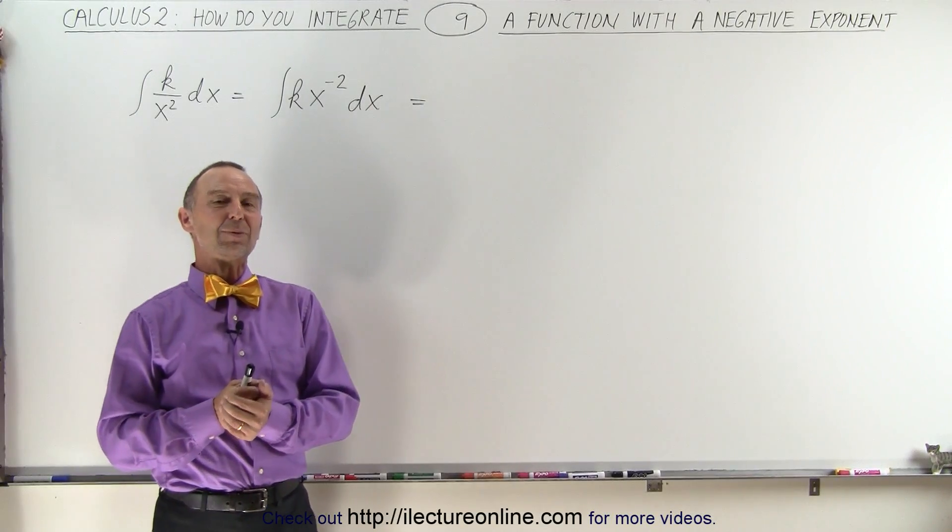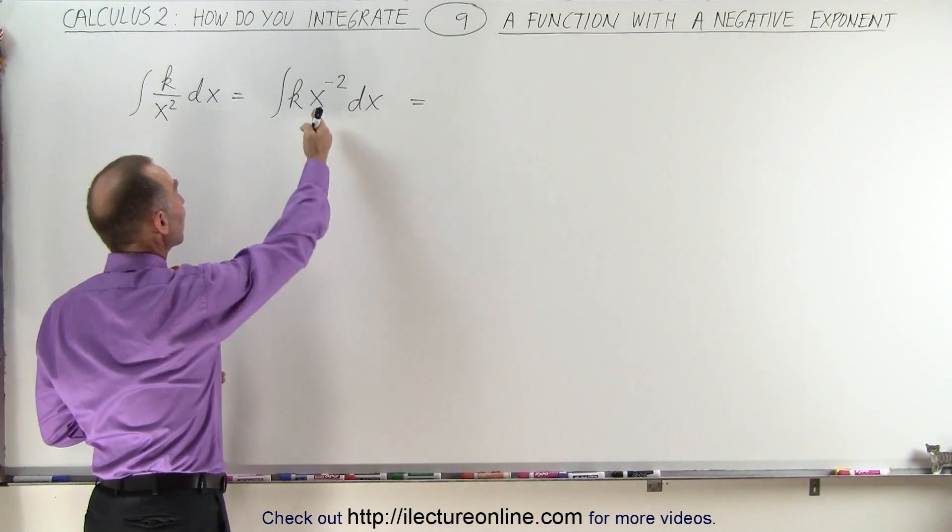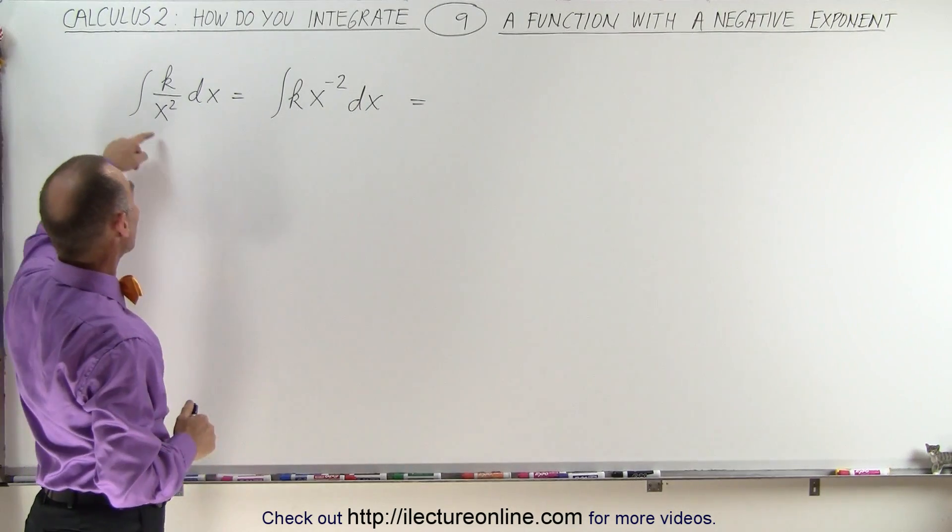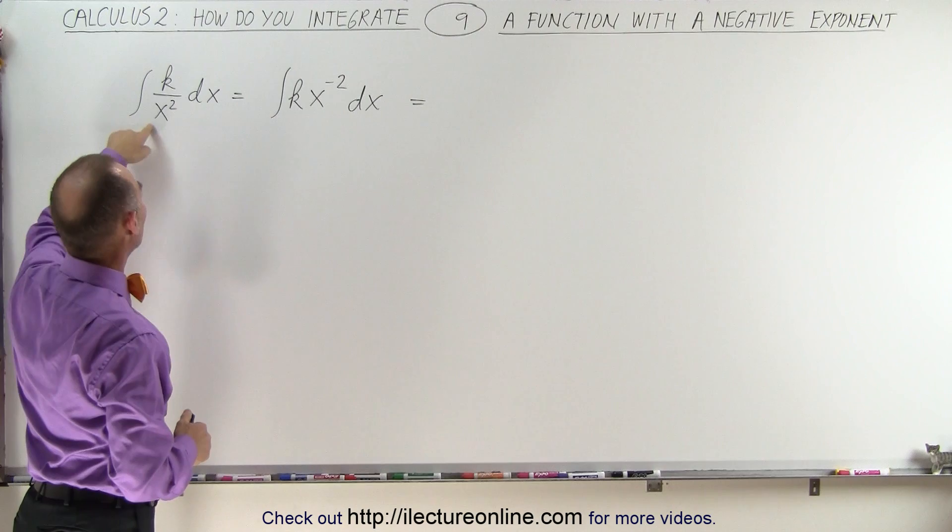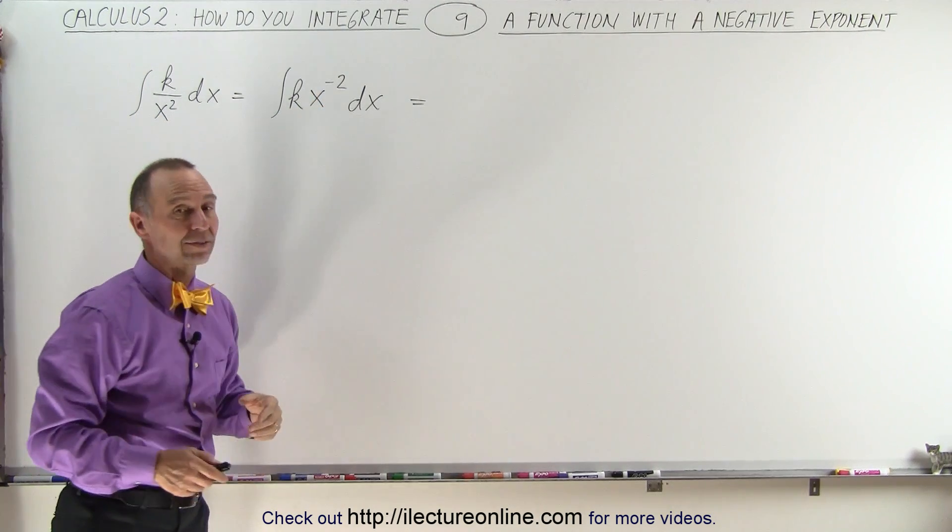Welcome to our lecture online. Here we're going to show you how to integrate a function that has a negative exponent in it. For example, when you have the integral of k over x squared dx, you can write it as k times x to the minus 2 dx.